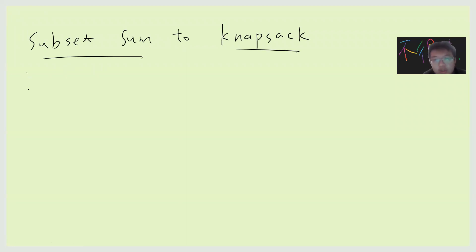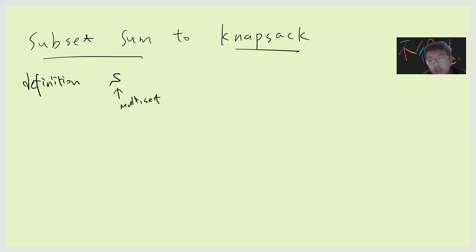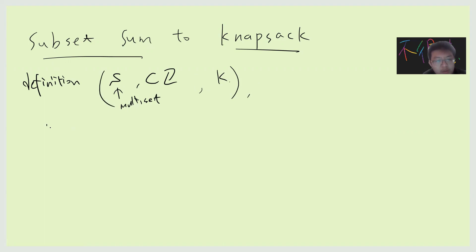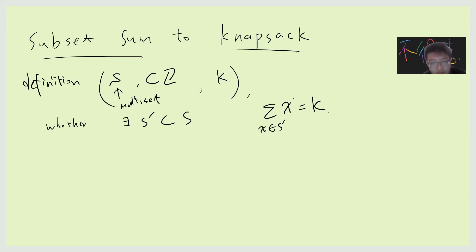Let me explain the detail or quickly review the definition. The definition of subset sum is that you take S, which is a multi-set — in computer science language, a multi-set is a set which is allowed to have duplicates. S should be a subset of integers, and you take another integer k. The goal is to determine whether there is an S prime belonging to S such that the sum of x for x belonging to S prime equals k. This problem is called subset sum, and it is NP-complete.